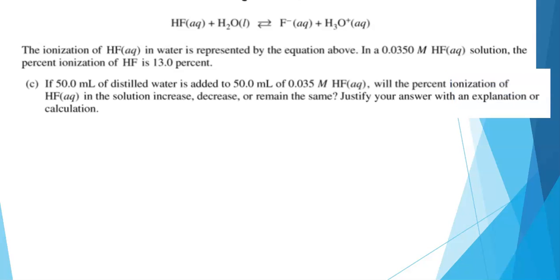Now there's one more part to this problem. If 50 mls of distilled water is added to 50 mls of the 0.0350 molar HF, will the percent ionization of HF increase, decrease, or remain the same? Justify your answer with an explanation or calculation. This part was kind of tricky. In general, weak acids have a higher percent dissociation as the concentration decreases. If you dilute your sample, the percent ionization increases because we need to maintain this equilibrium, right? We need to get back to the ratio determined by the Ka value. But writing it down like this is a little squishy. How could we back this up in a more general way?